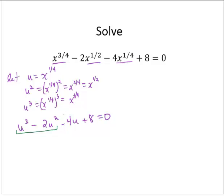u cubed minus 2u squared factors as u squared by u minus 2. And the second grouping, minus 4u plus 8, that can be factored as negative 4 by u minus 2.